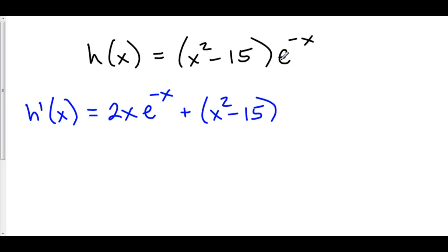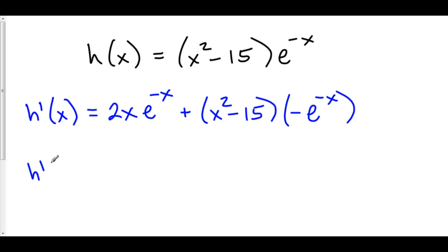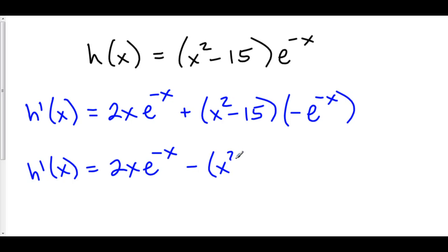The derivative of e^(-x) is negative e^(-x) because the derivative of the exponent is negative 1. We can pull this negative out and move it in front. So h prime of x is equal to 2x·e^(-x) minus x² minus 15 times e^(-x).